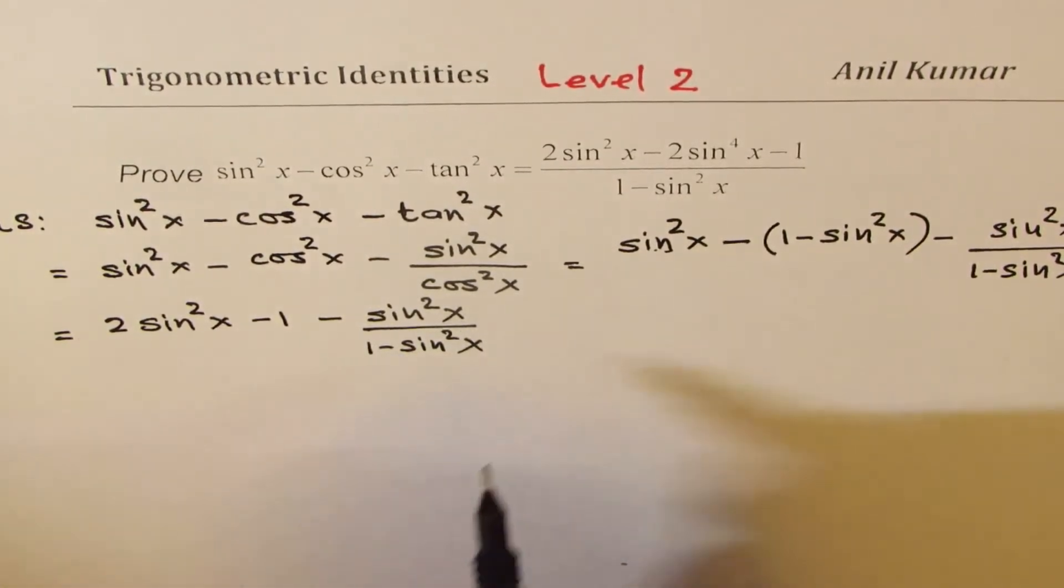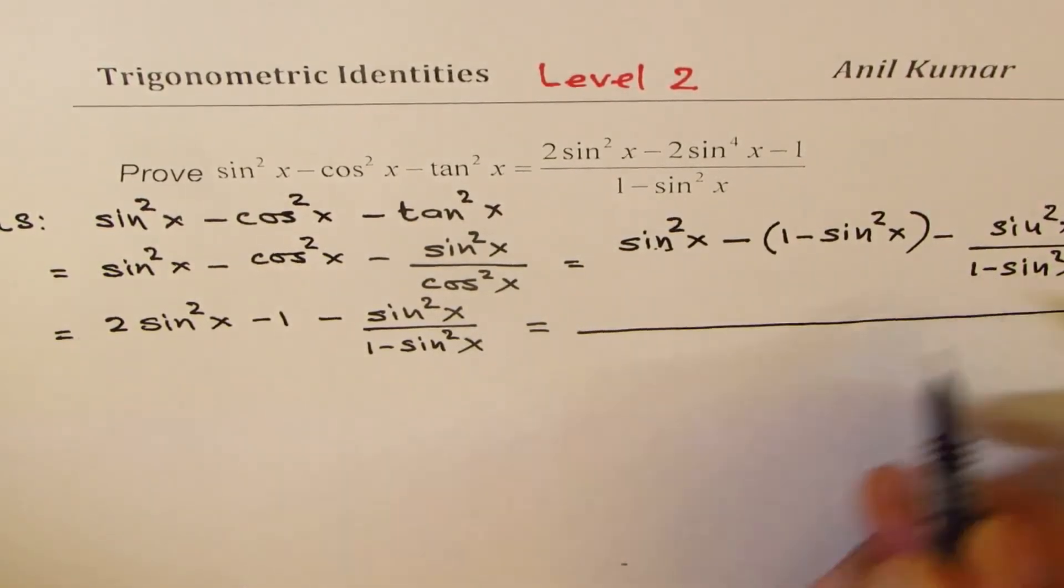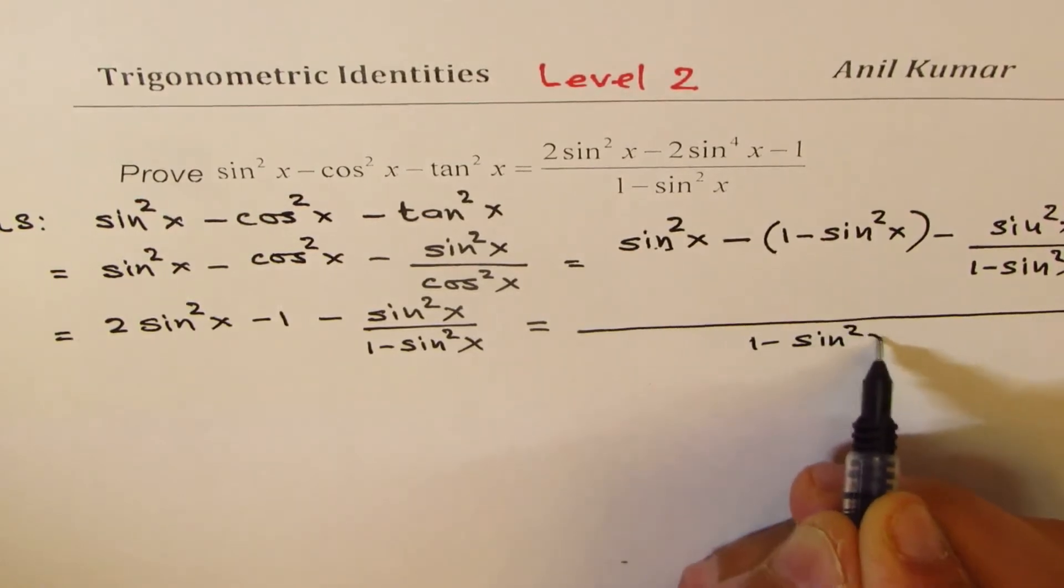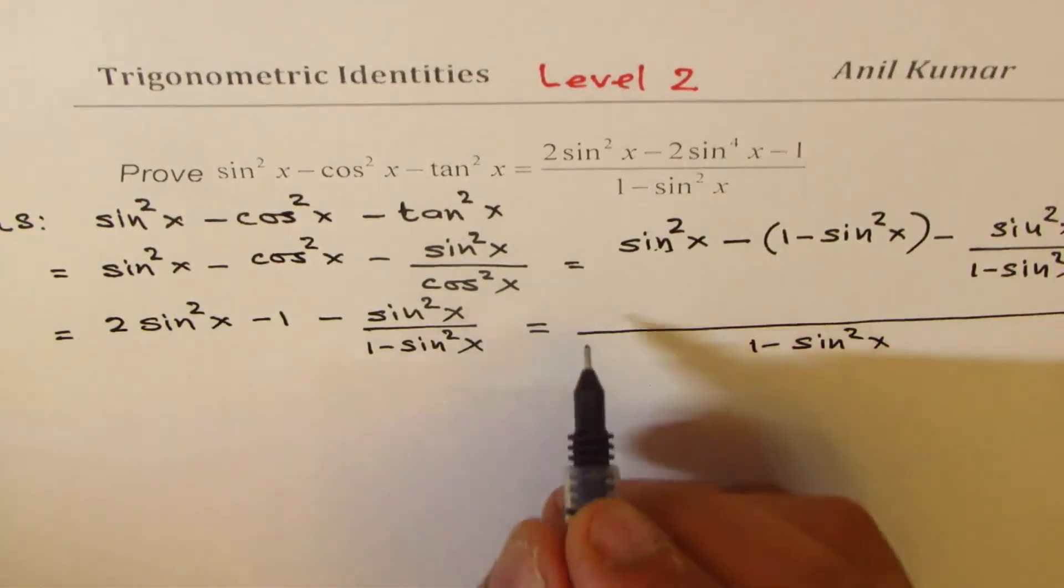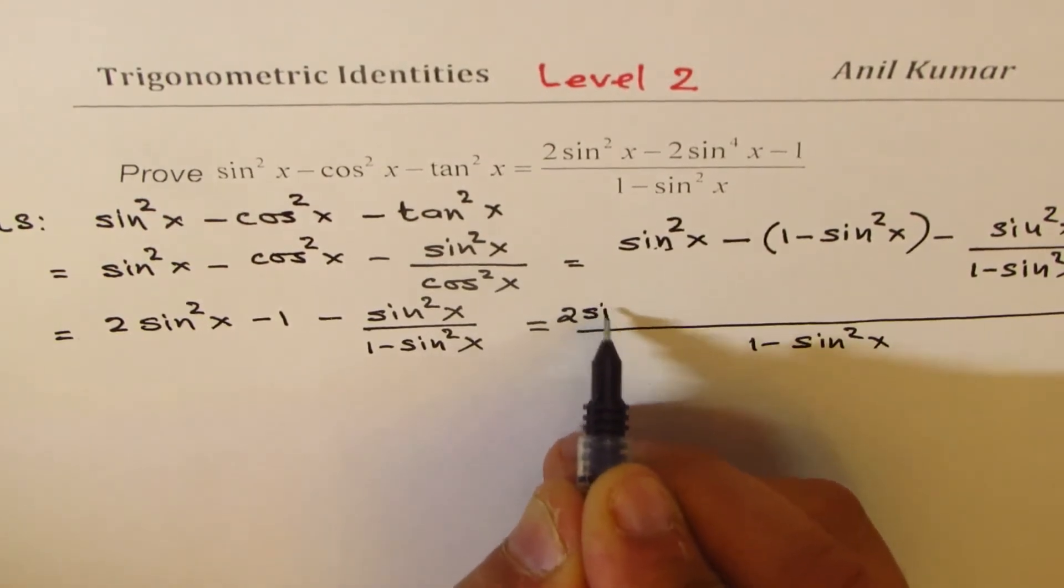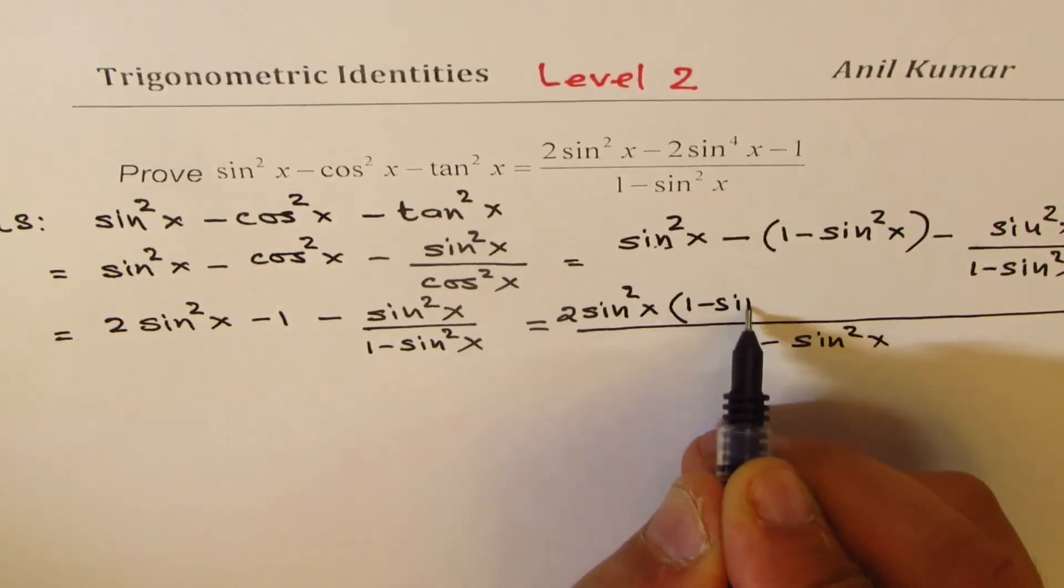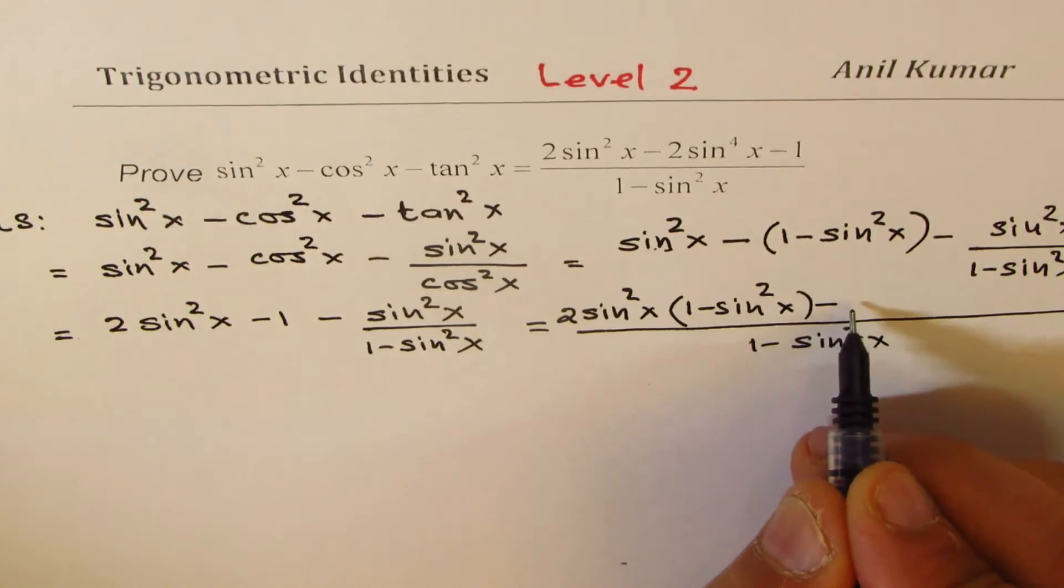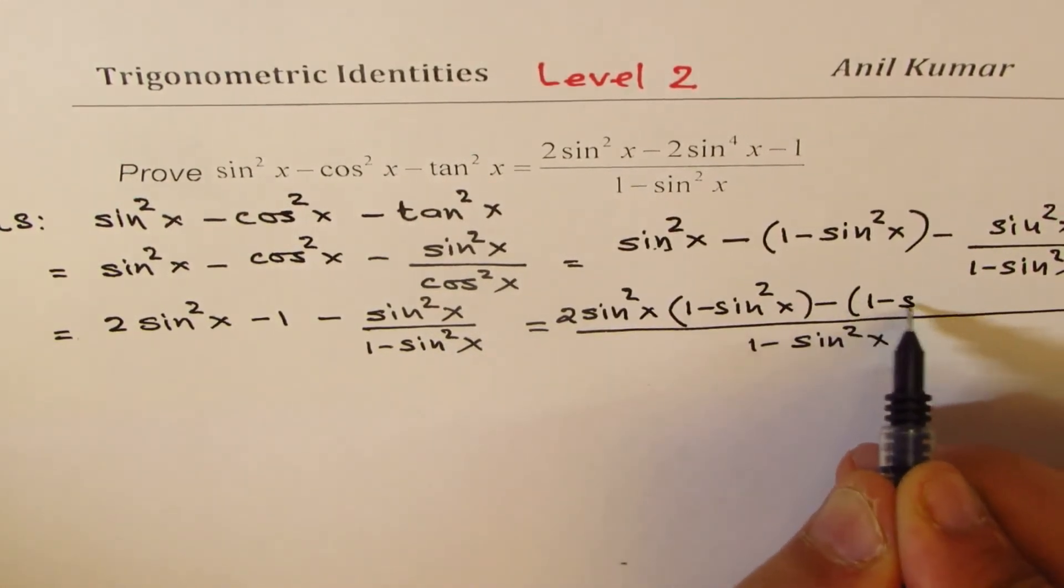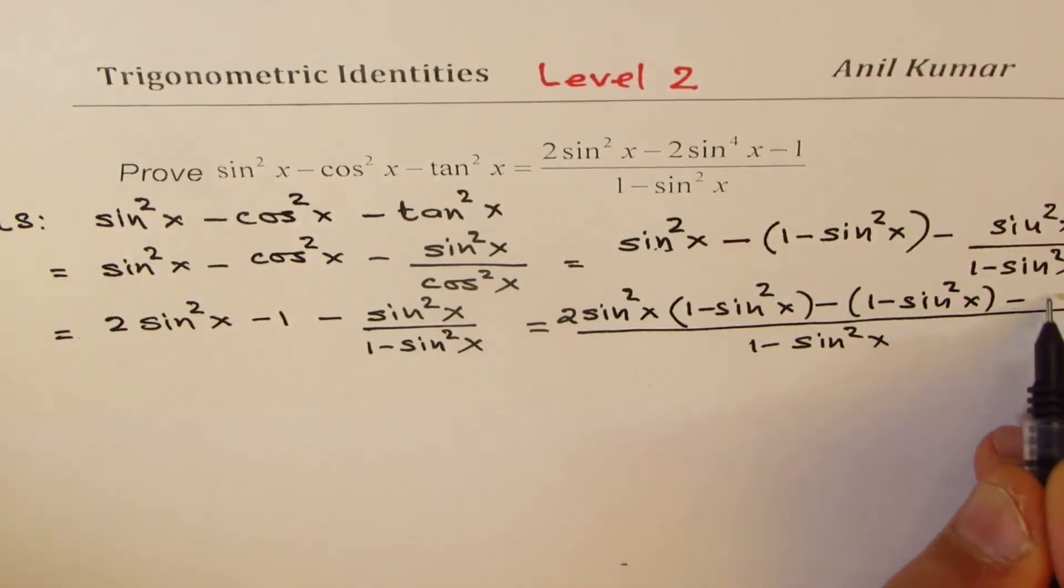Now we can take this as a common denominator. So I will take 1 - sin² x as common denominator. Multiply these two terms with 1 - sin² x. So we get 2 sin² x times 1 - sin² x, minus 1 times 1 - sin² x, and we already have minus sin² x. Is that clear?